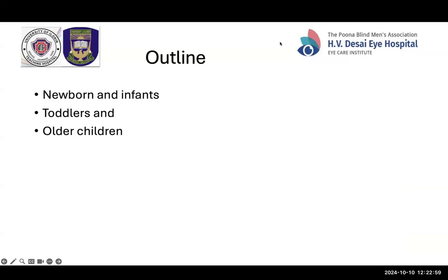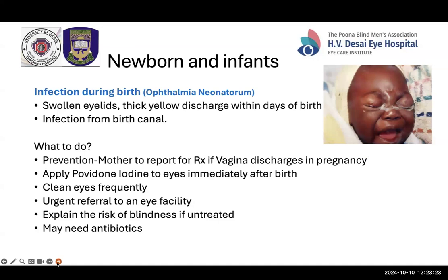Our presentation covers conditions affecting newborns and infants, then toddlers, then older children, and finally injuries and other common conditions. Ophthalmia neonatorum — infection in a newborn baby — presents with swollen eyelids and thick yellow discharge within a few days of birth, typically within a week. The baby catches infection from the birth canal during delivery. Prevention involves treating any infection in the mother. If there is active infection in the baby, apply povidone-iodine eye drops immediately, clean the eyes very frequently, and urgently refer the baby to an eye facility — preferably on the same day.